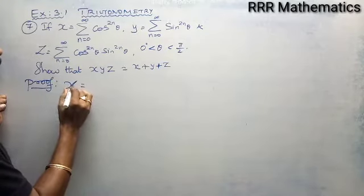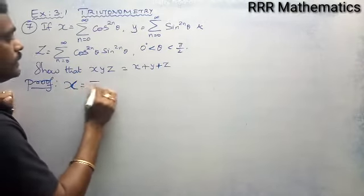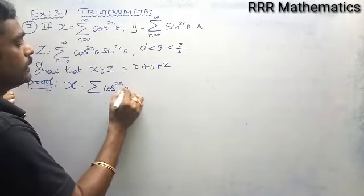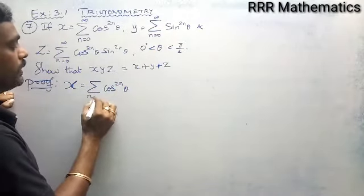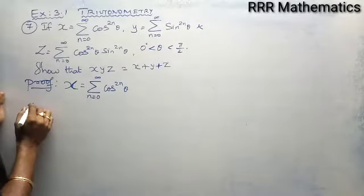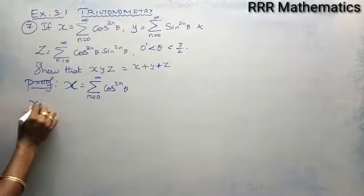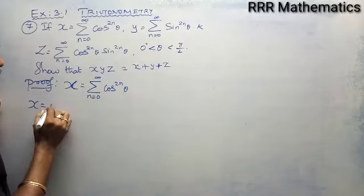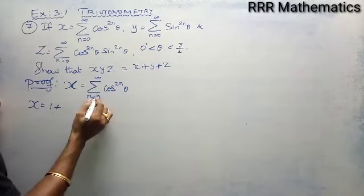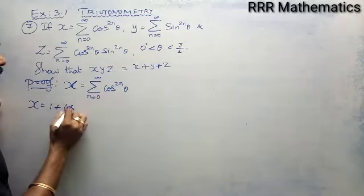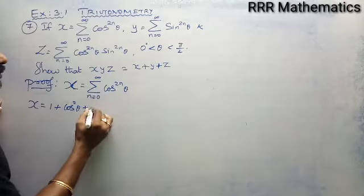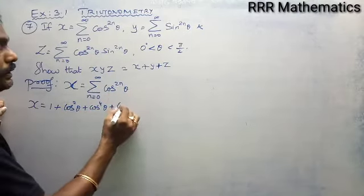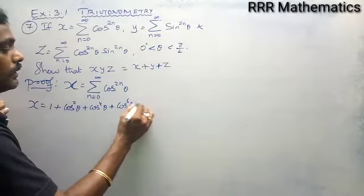My x will be sigma cos^(2n) theta, where n equals 0 to infinity. When you substitute n=0, you get 1. When you replace n=1, you get cos square theta. When you replace n=2, cos power 4 theta. When you replace n=3, cos power 6 theta, and so on.